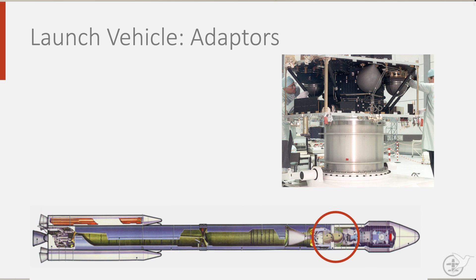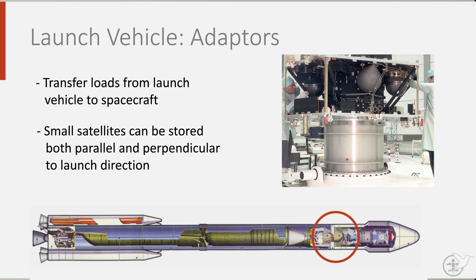Finally, the adapters. They transfer the loads from the launch vehicle to the spacecraft. Here you see the adapter for the European Hipparchos satellite. Space is definitely aviation's biggest brother when it comes to structures. This makes spacecraft and launch vehicle design a complex and challenging enterprise, and it has not yet reached its final frontier.